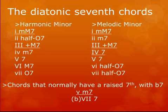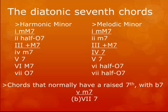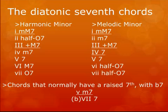In the melodic minor we have: the 1 minor major 7, the 2 minor 7, the 3 augmented major 7, the 4 dominant 7, the 5 dominant 7, the 6 half diminished 7, and the 7 half diminished 7. At the bottom are chords that normally have a raised 7th but here use a flat 7 instead — so the 5 minor 7, which sounds modal, and then the flat 7 major 7, which can be equated to another diatonic key.